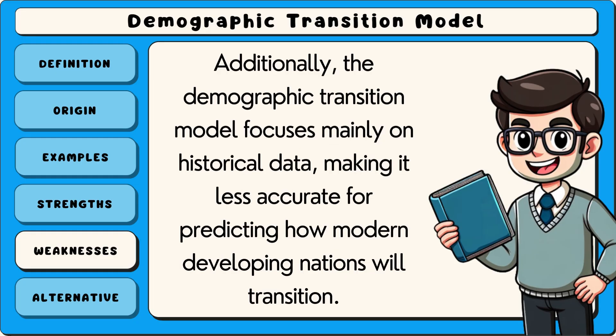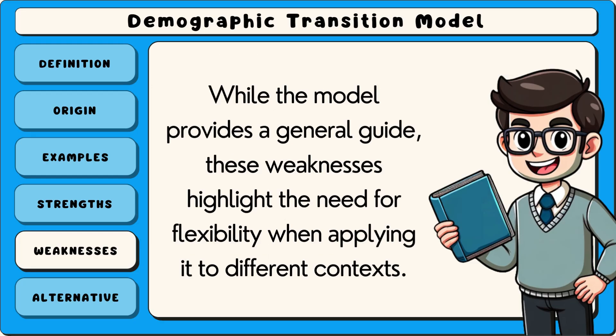Additionally, the demographic transition model focuses mainly on historical data, making it less accurate for predicting how modern developing nations will transition. While the model provides a general guide, these weaknesses highlight the need for flexibility when applying it to different contexts.